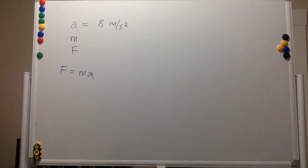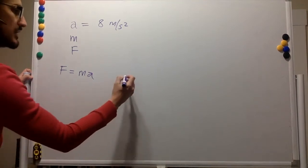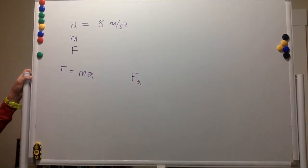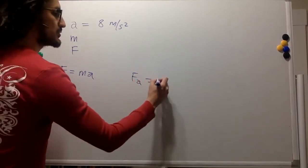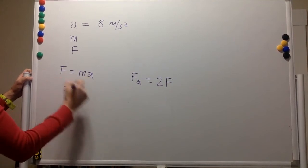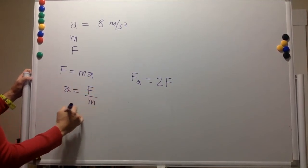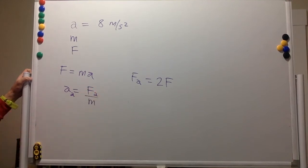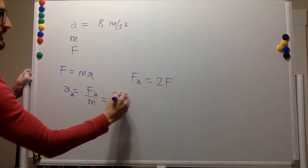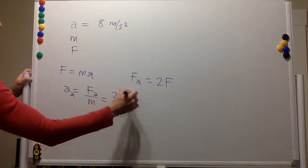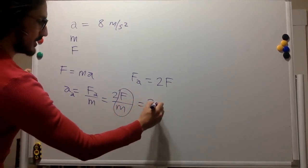What will the acceleration be if you double the force? Let's call the force of part A twice the regular force. The acceleration is force divided by mass, so the acceleration of part A is the force of part A divided by mass — that's twice the original force divided by the mass, which gives twice the original acceleration.